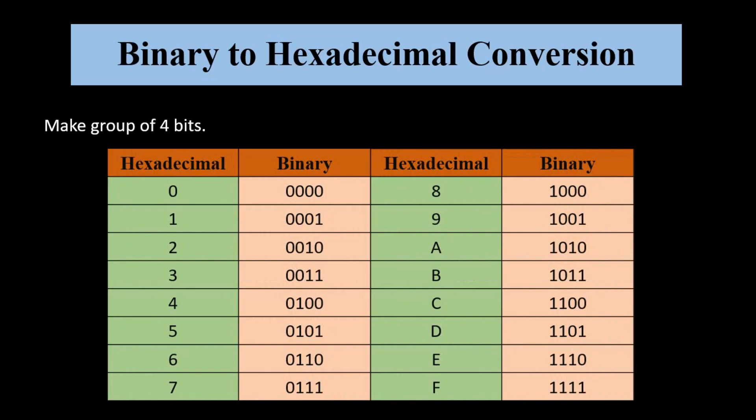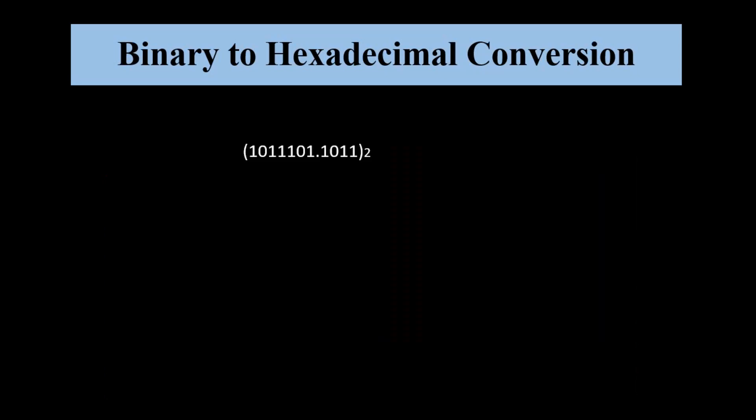So we take a binary number 01011101.1011. Now we have to convert this to hexadecimal number. From the point we have to move left side for the integer part.